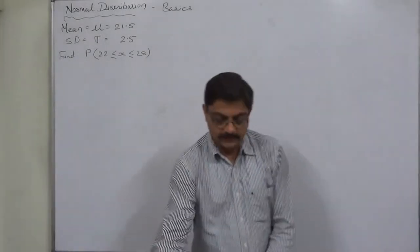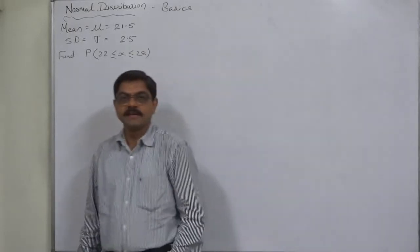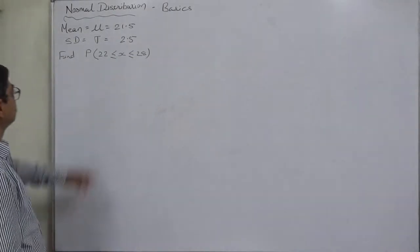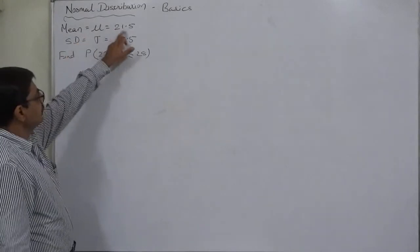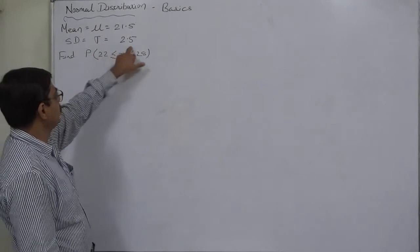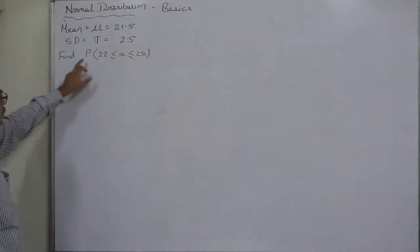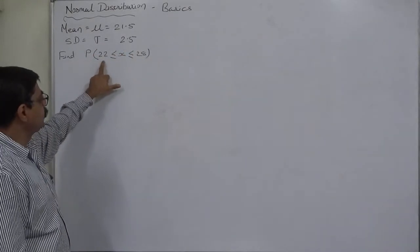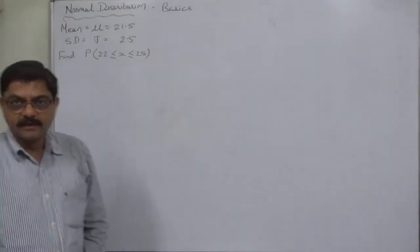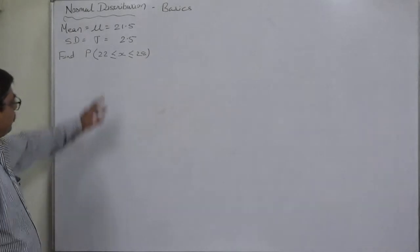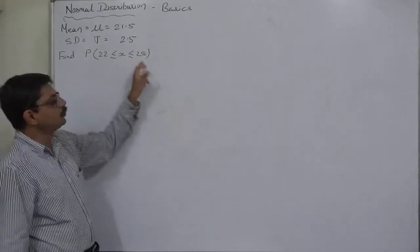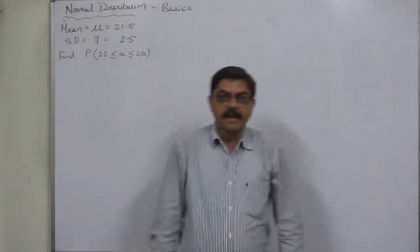Hello and welcome. Let's take one more case in basics of normal distribution. The case is: mean or mu is 21.5, standard deviation or sigma is 2.5, and we need to find out the probability of 22 less than or equal to x less than or equal to 28. In simple words, what is the probability that x takes values between 22 and 28?